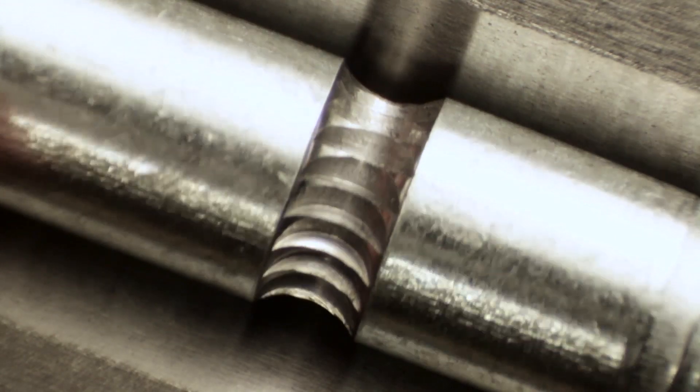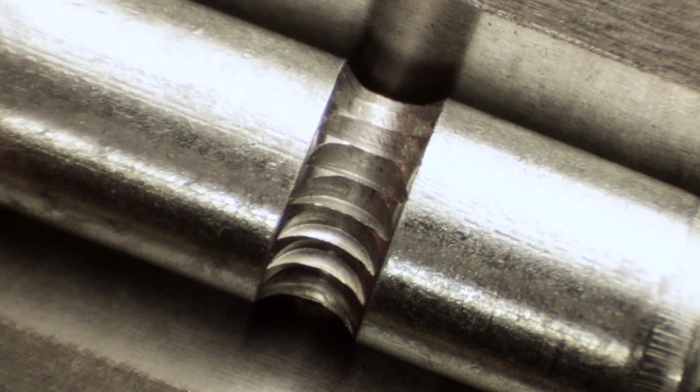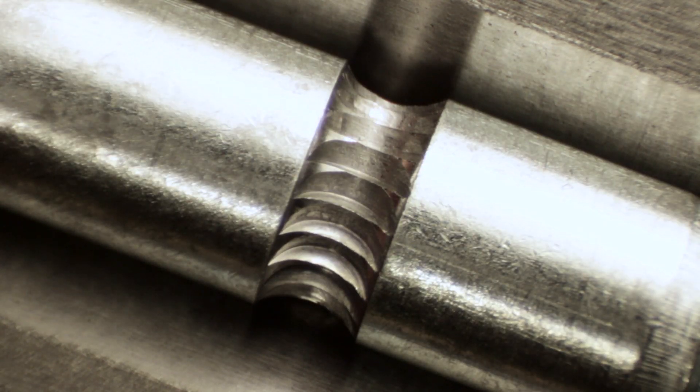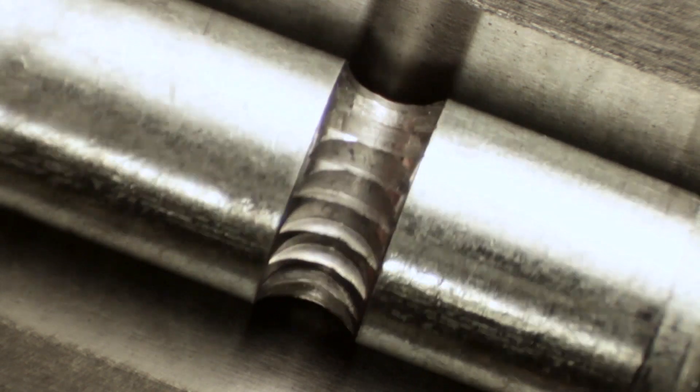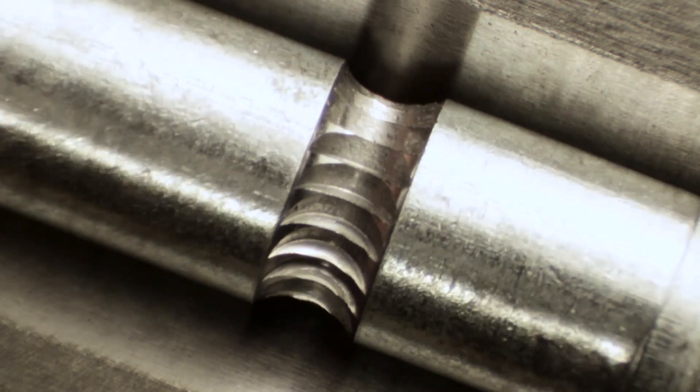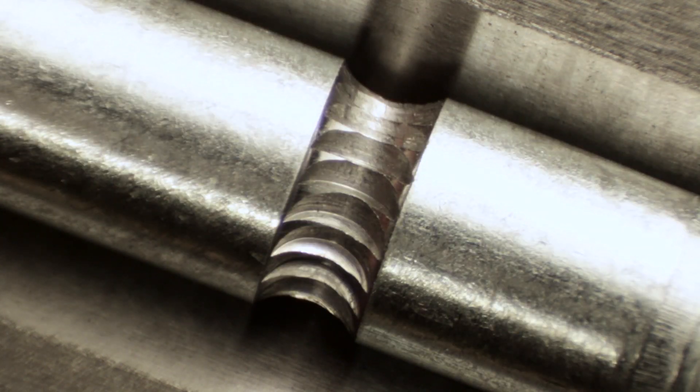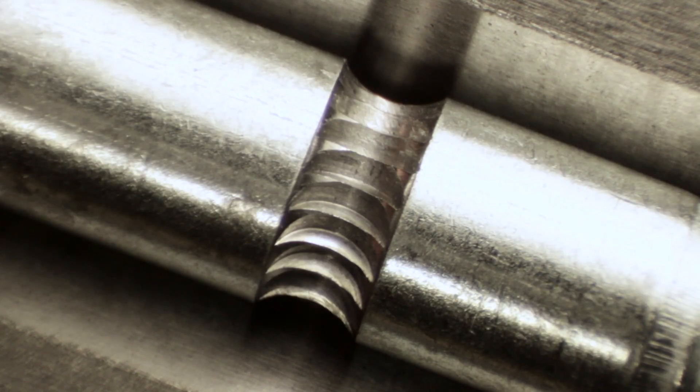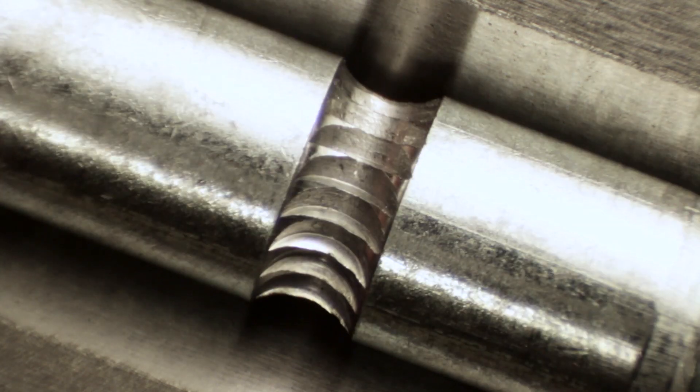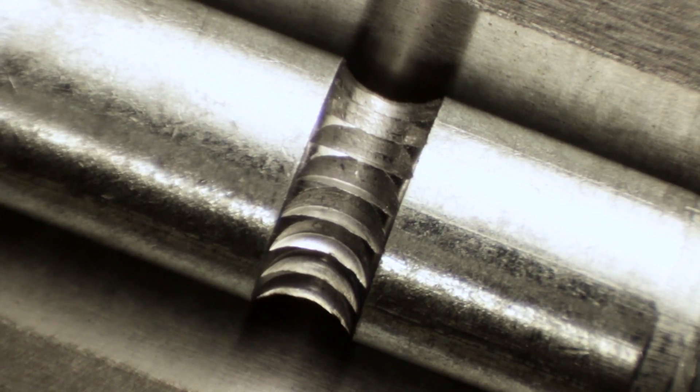You can see that carbide does a beautiful job. It's very, very sharp and it stays sharp a long time. I can do easily a hundred bolts on one end mill and after that, I don't even see the wear unless you get under the microscope, you can just barely see the wear starting. So carbide is good stuff.